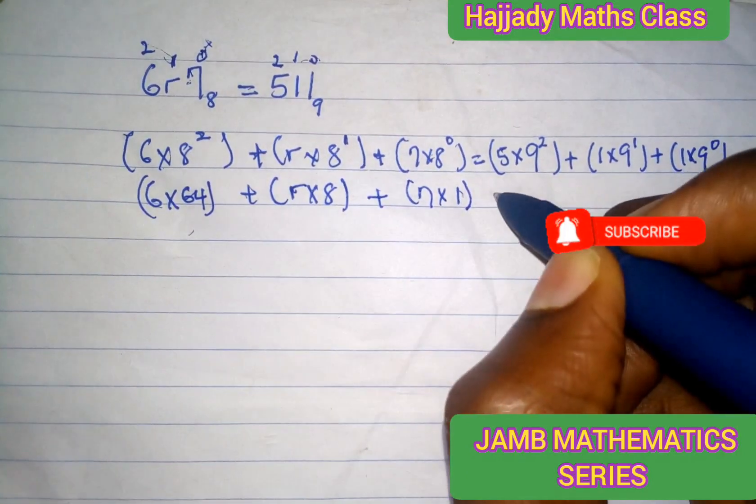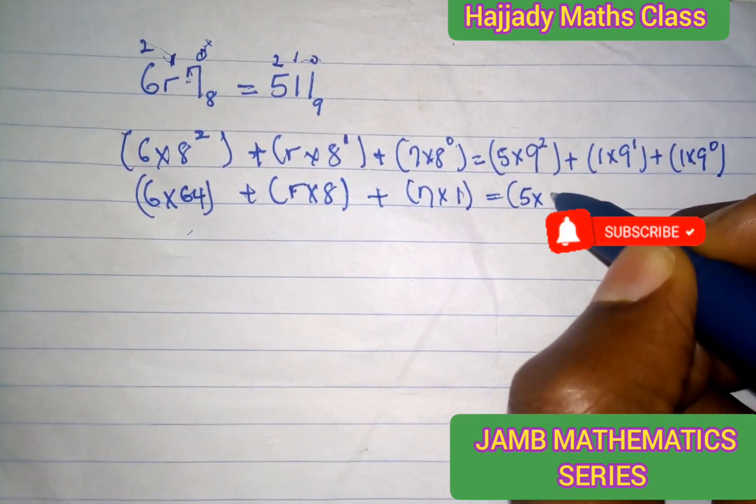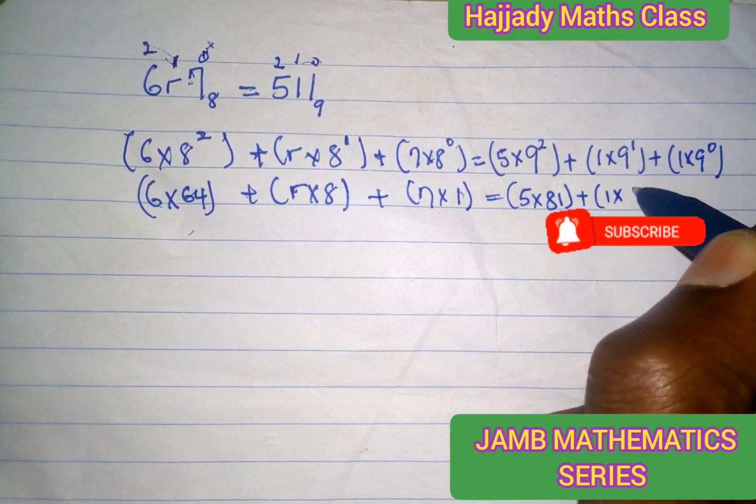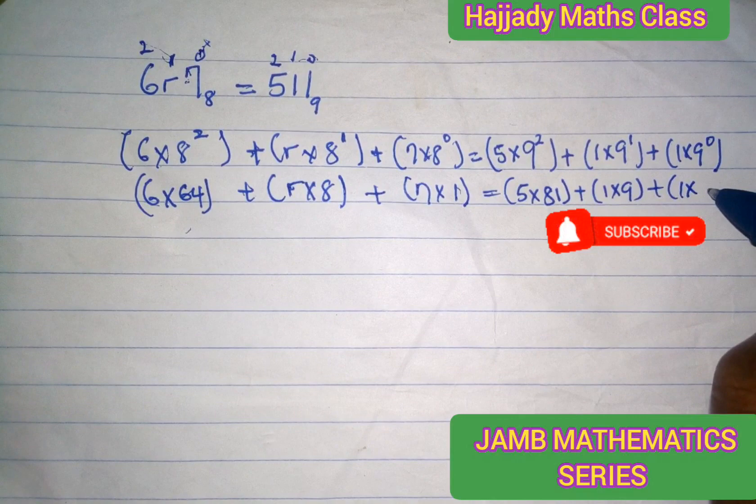This equals 5 times 9 raised to the power of 2, which is 81, plus 1 times 9 raised to the power of 1 is 9, plus 1 times anything raised to the power of 0 is 1.